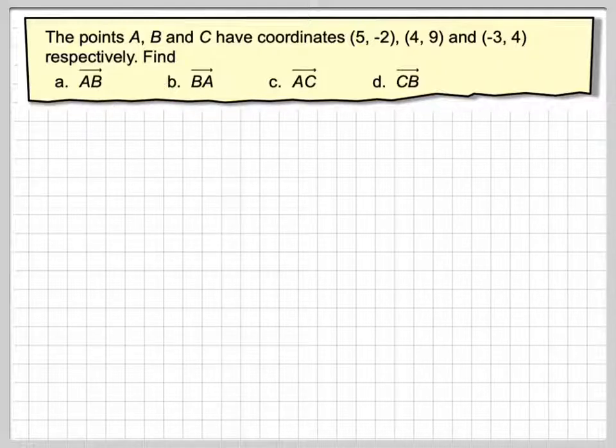Find vector AB, the vector BA, and the vector AC, and the vector CB. Now, for all this to work, we have to let O be the origin, the point (0, 0).